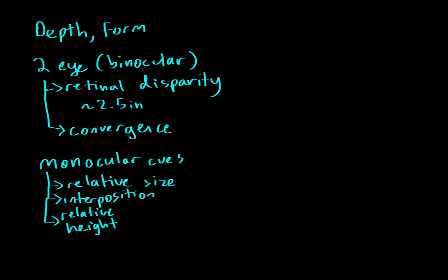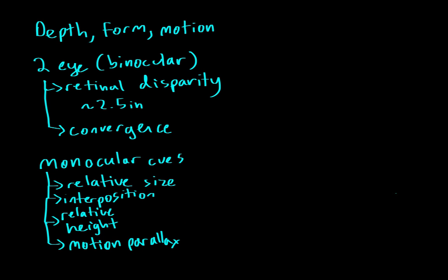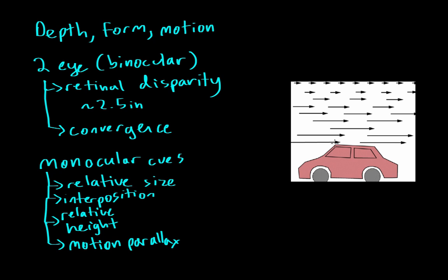There is another degree to perceptual organization, and that is motion. Whenever we perceive an object, we have to determine whether it's moving or not. One interesting monocular cue is motion parallax, also called relative motion. When you're in a car driving, things closest to you appear to move very quickly, whereas things further away appear to move slowly. For example, mountains in the distance look like they're barely moving, while the road right next to you looks like it's moving very fast. That's relative motion — you can gauge distance by how much things move as you move.